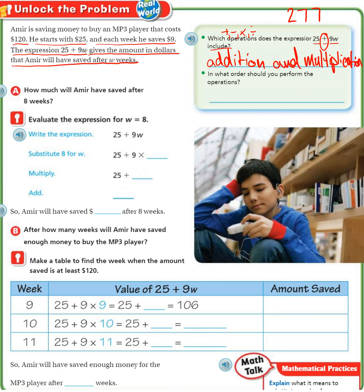In what order should you perform the operations? Multiplication first, then addition. Order of operations, right?